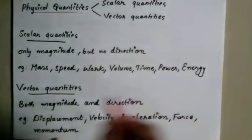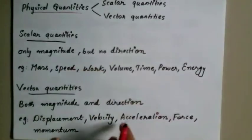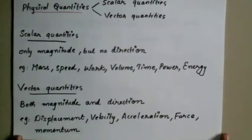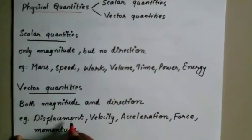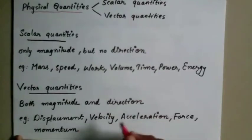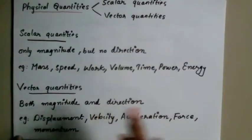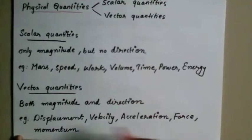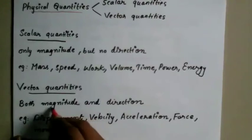Vector quantities have both magnitude and direction. For example, displacement is 15 meters — 15 is the magnitude, and displacement also has a direction. Other vector quantities include velocity, acceleration, force, and momentum — all have both magnitude and direction.